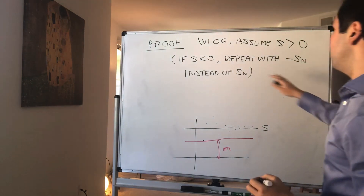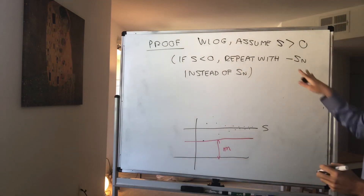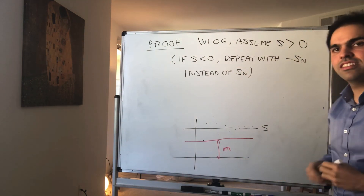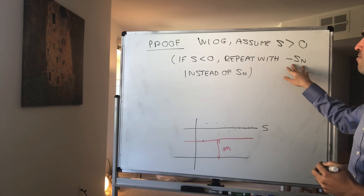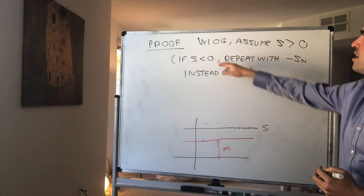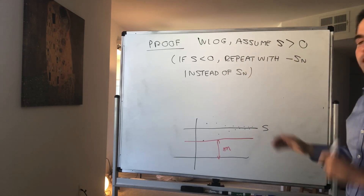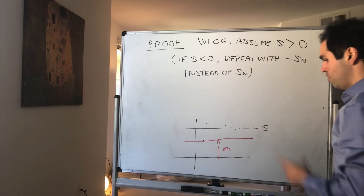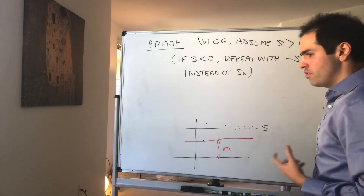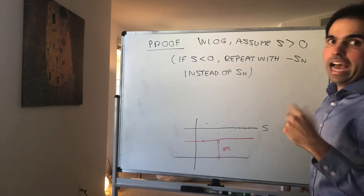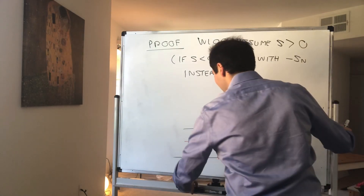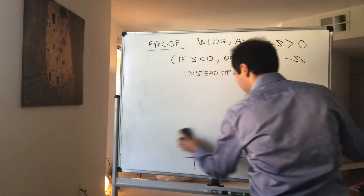Why? If S_n is non-zero, then minus S_n is non-zero. Moreover, the limit of minus S_n becomes minus s, which becomes positive. And last but not least, the absolute value of minus S_n is just the absolute value of S_n, so it really gives you the same result.